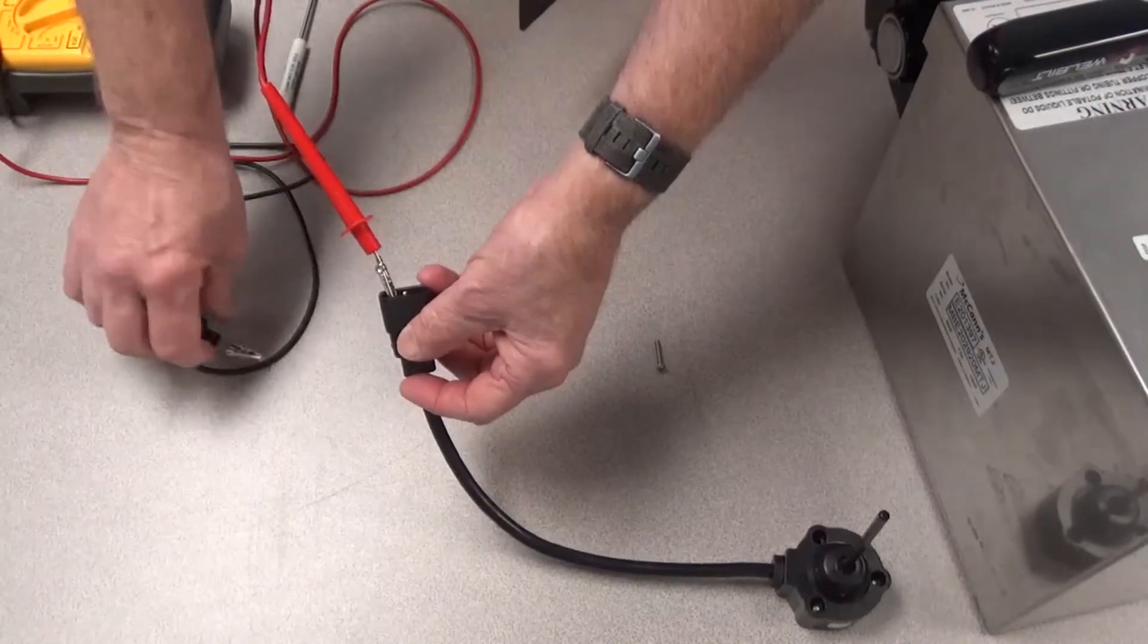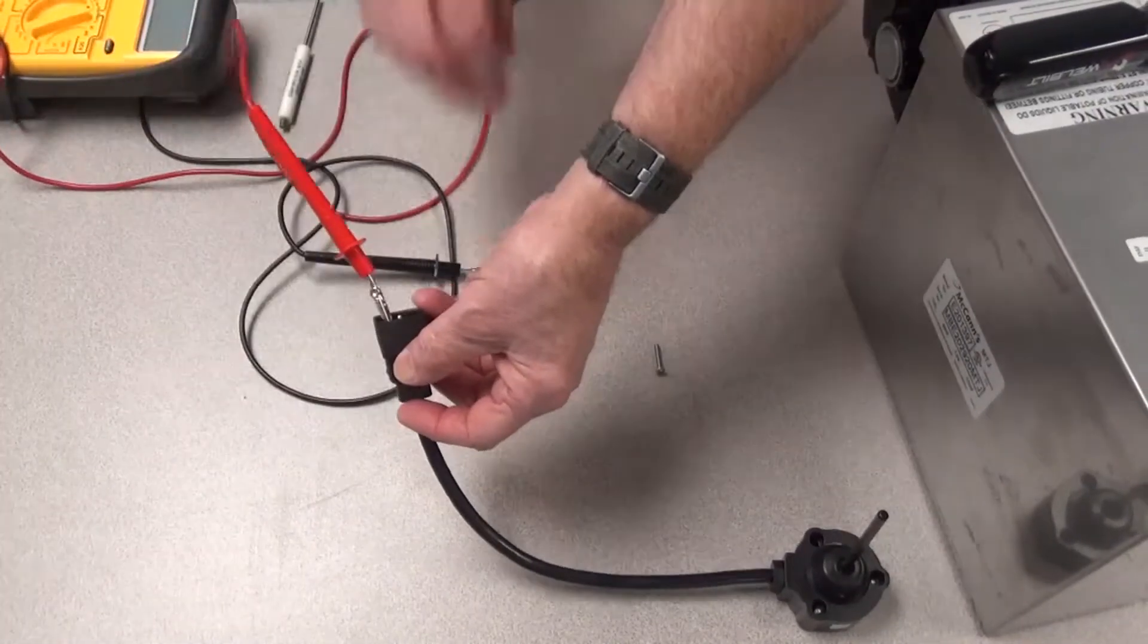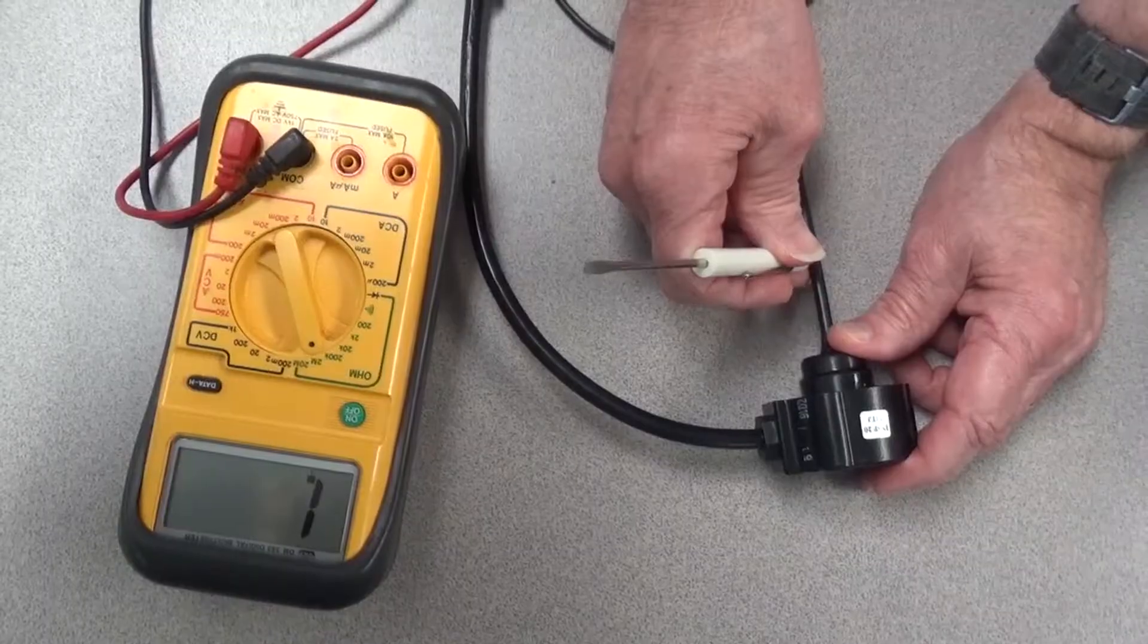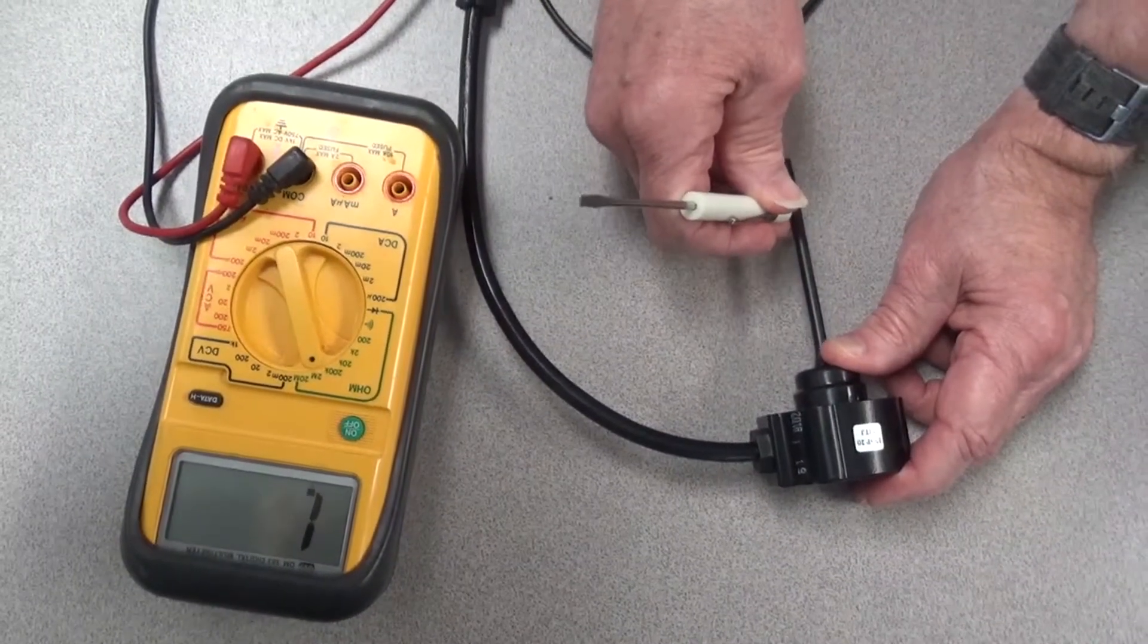Set your meter to ohms. Clamp one lead from your meter to each of the two probes that are horizontally across from each other. Run a magnet up and down the probe.